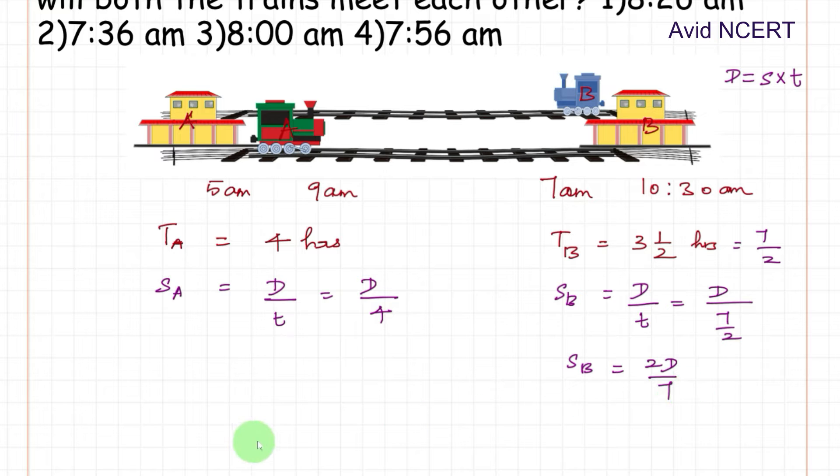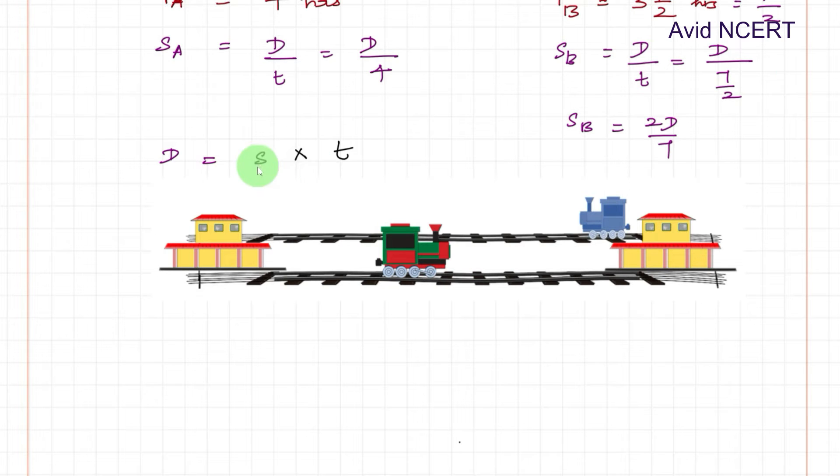Now the next is to find the distance. So distance equals speed into time. We know the speed, whereas to find the time taken to meet, we have to find from this.